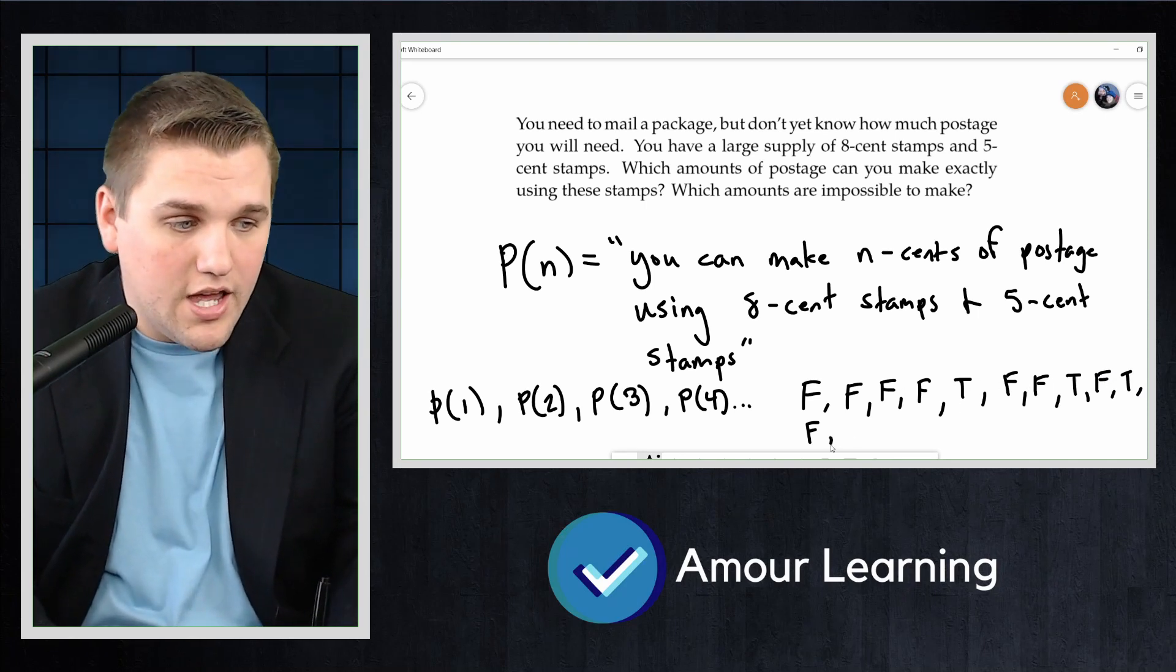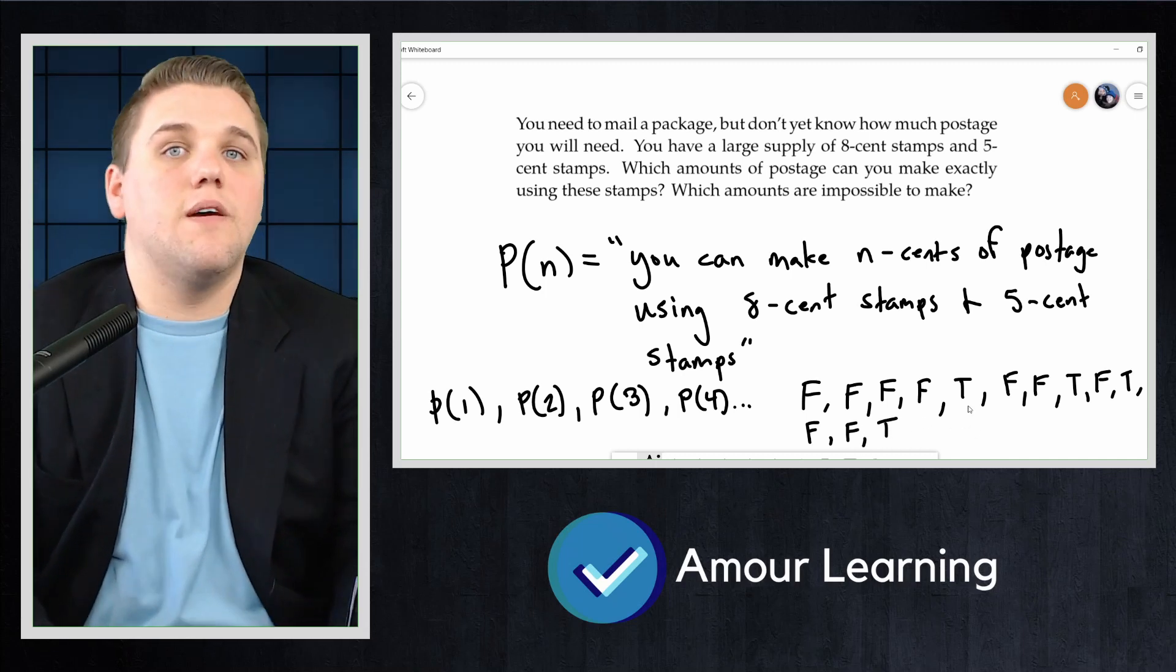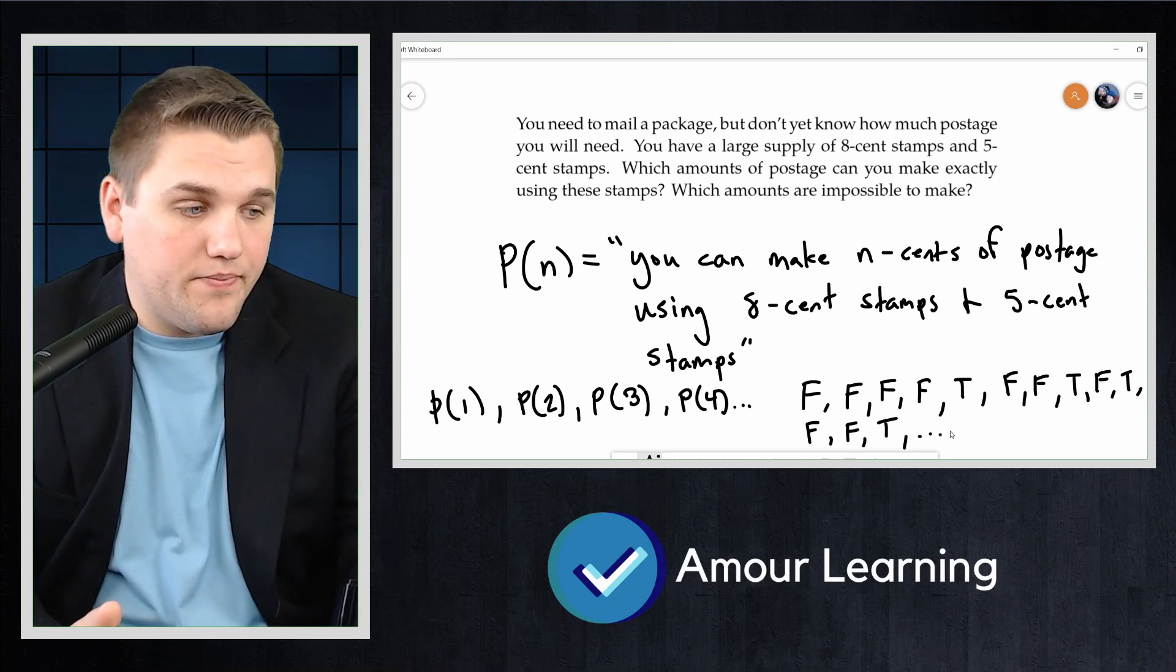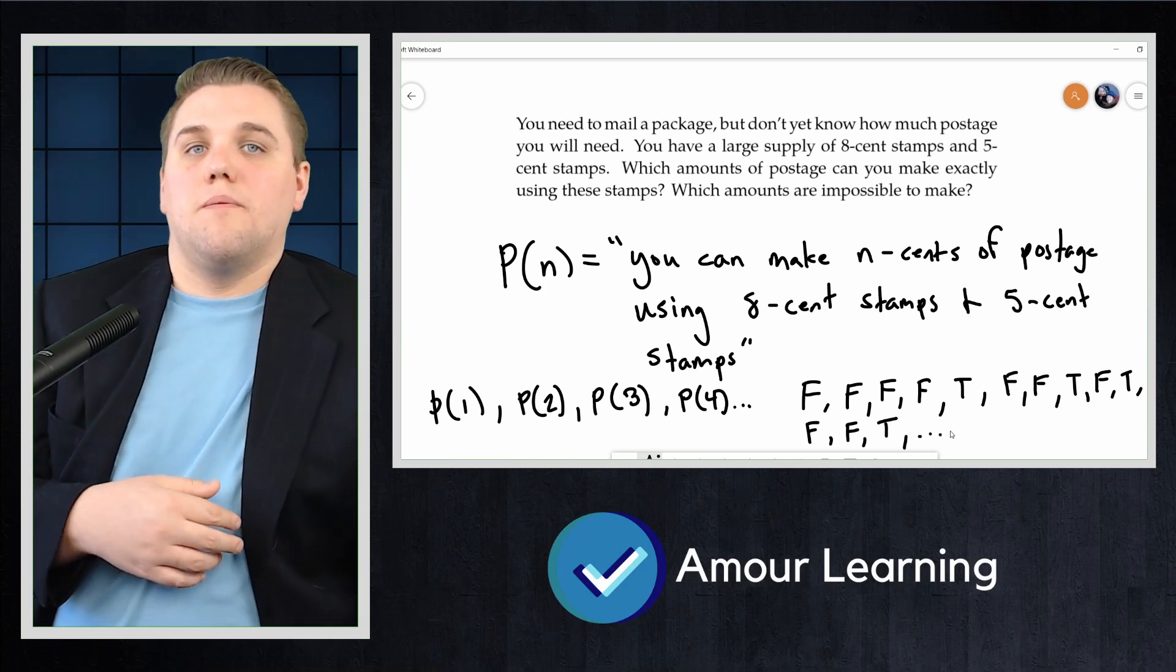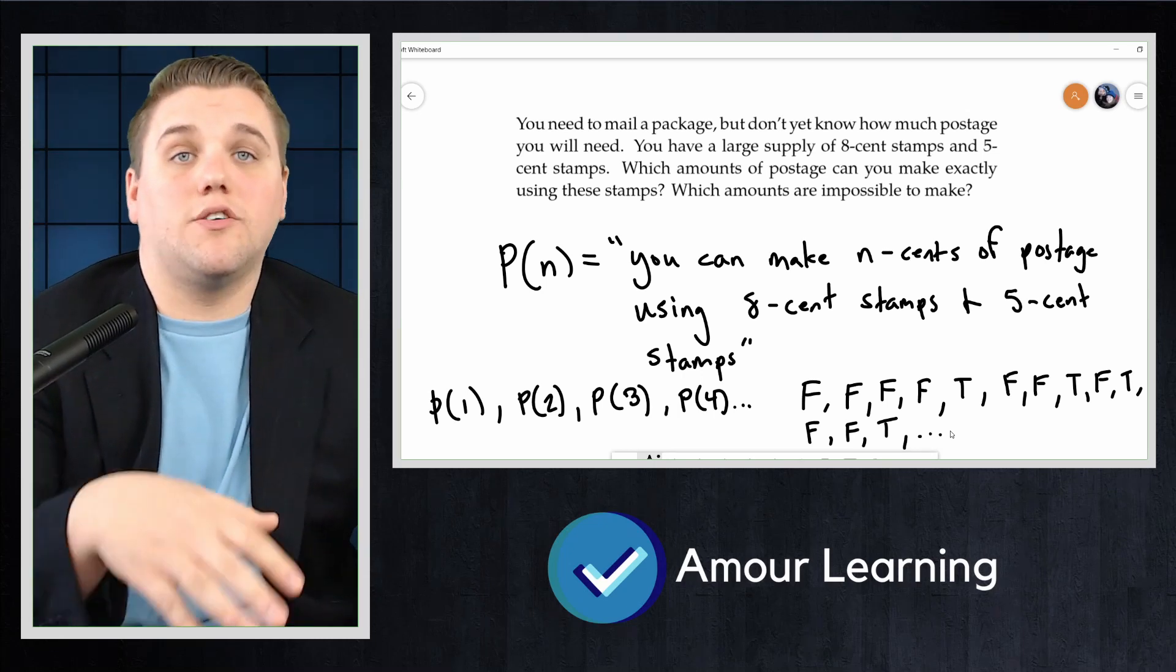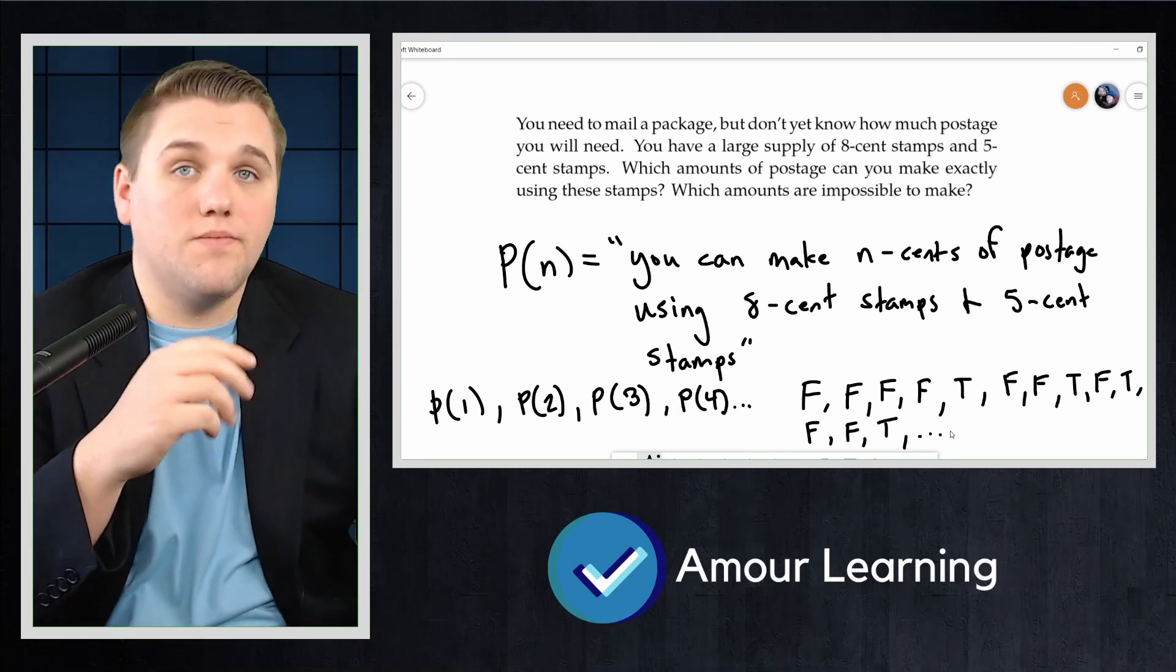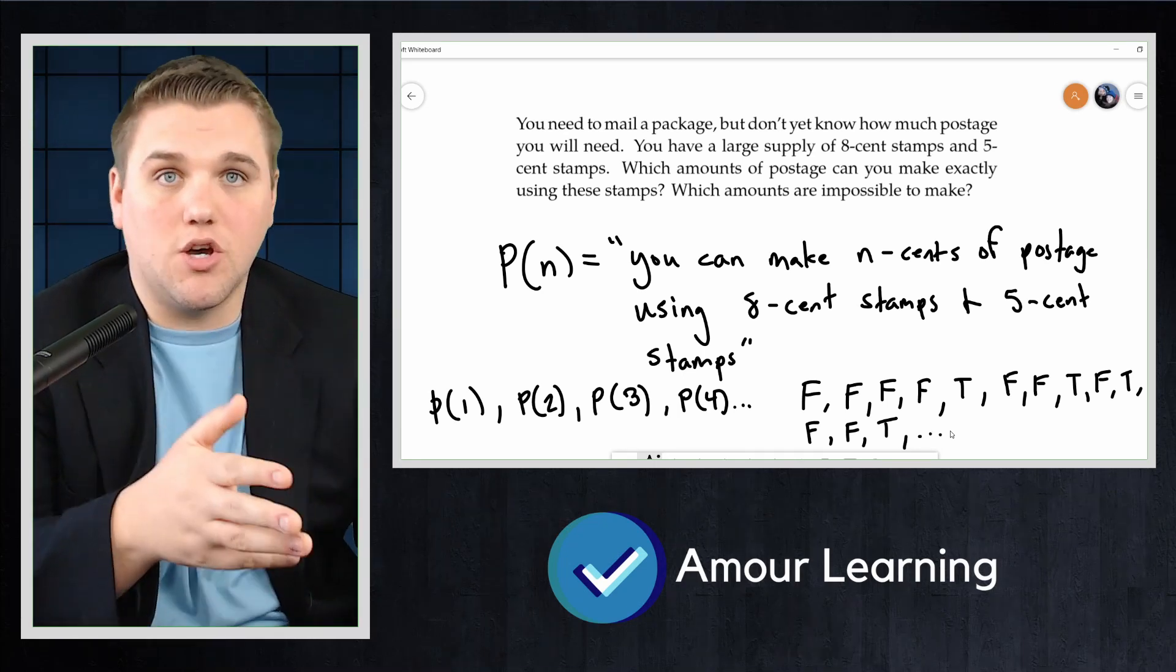Can't make 11. Can you make 12? You can't make 12. Can you make 13? Yes, you can make 13, and so on. Because P(1), P(2), P(3), P(4) are all false. You can't make 1 or 2, 3 or 4 cents of postage. P(5) is true. Use one 5-cent stamp, and so on.